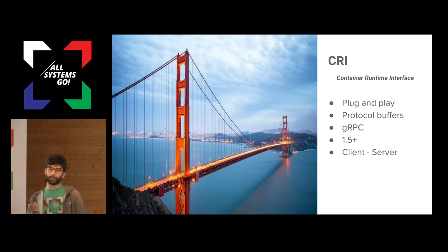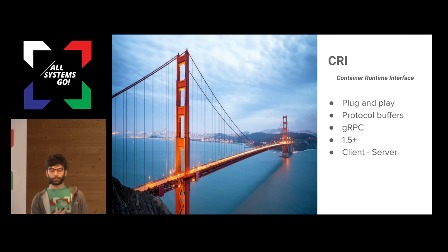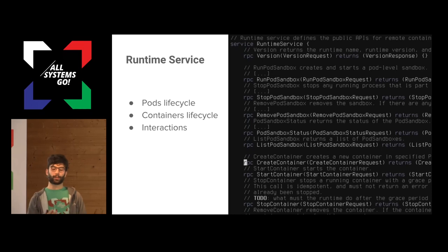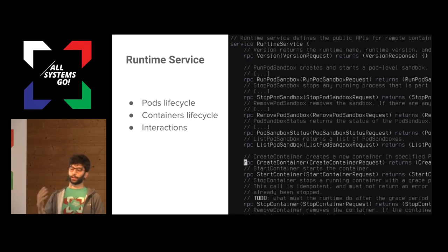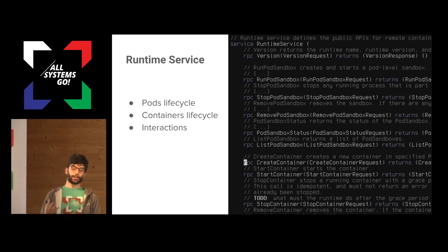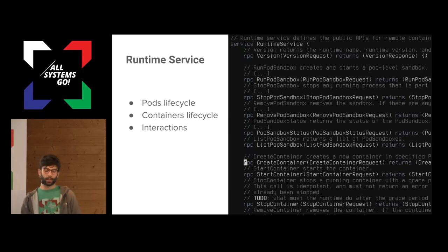It's a client-server architecture. The container runtime implements the server side of this API, and the kubelet implements the client side. The CRI itself consists of two main pieces. One is the runtime service, which is the one in charge of the pods and the container life cycles, which includes actions like running a pod, stopping it, creating a container in a given pod, getting the list of all running containers in Kubernetes, as well as handling interaction for things like grabbing the logs for a container, executing into a running container, and attaching.